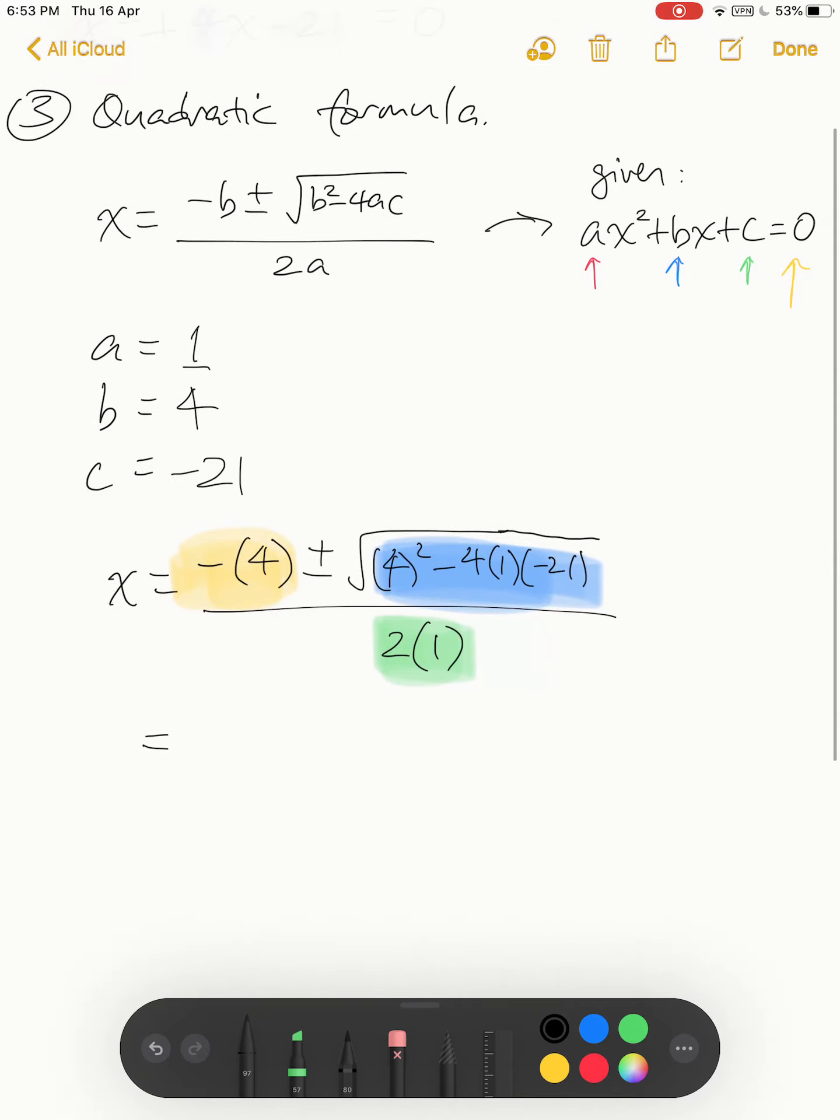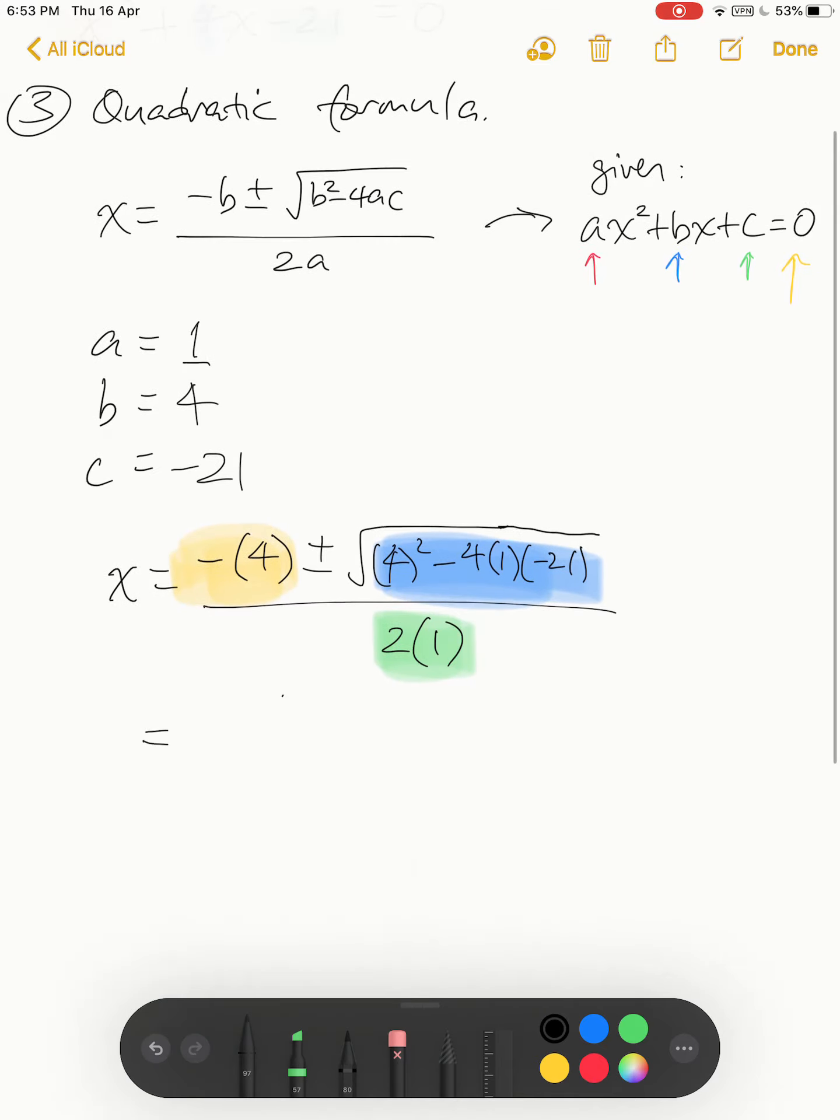What is in yellow will be negative 4, plus or minus square root—what is in blue, use the calculator to double check, it equals 100—and what is in green, 2 times 1 gives me 2.